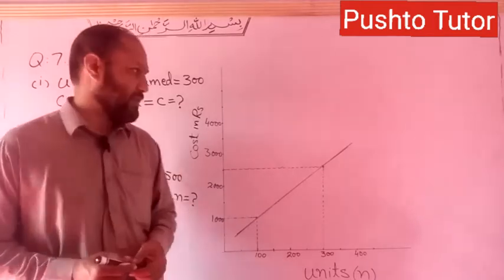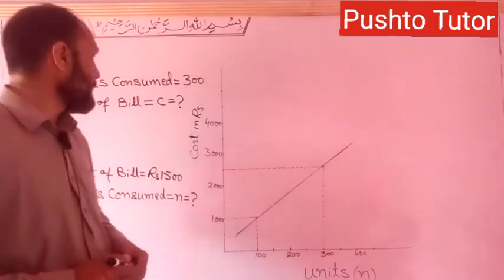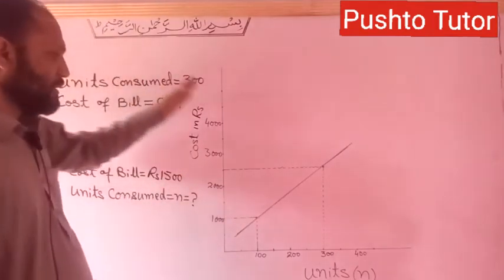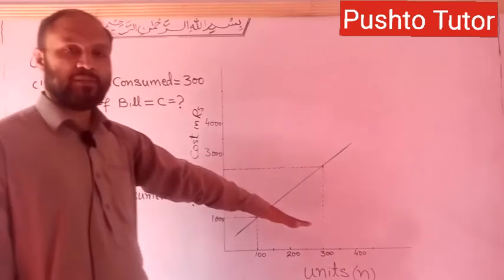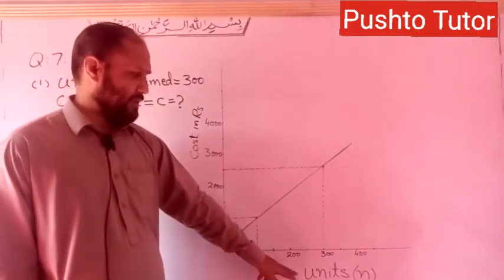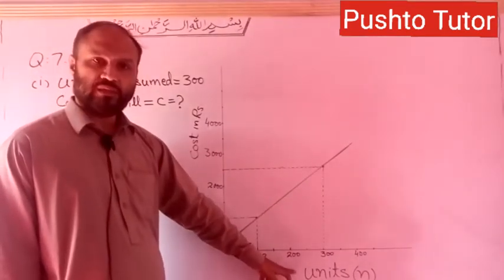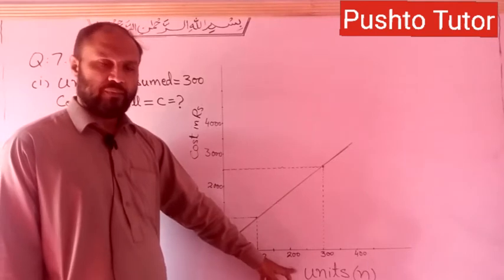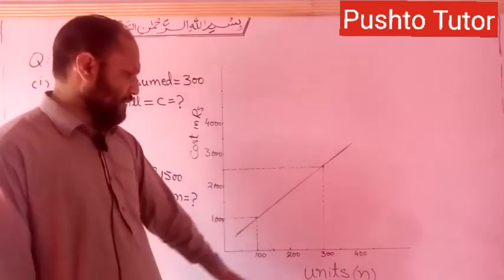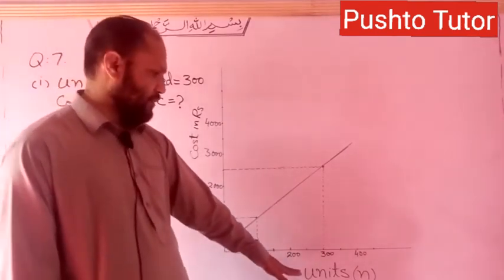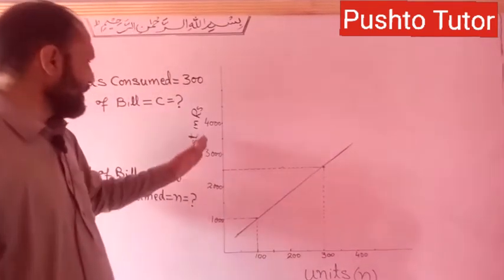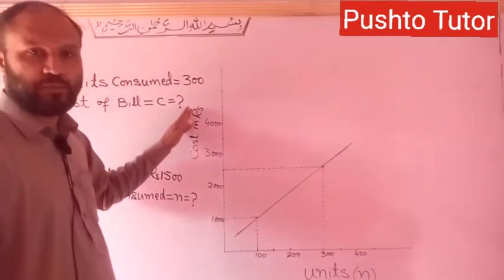Question number 7 is a graph question. The units are on the x-axis and the y-axis shows cost in rupees.